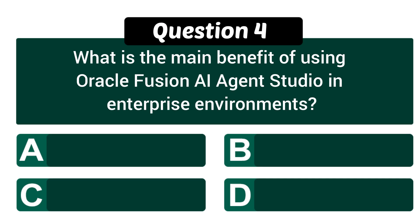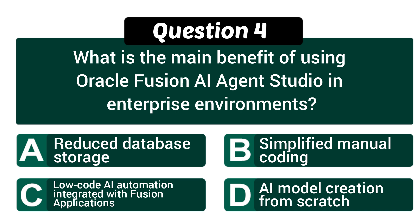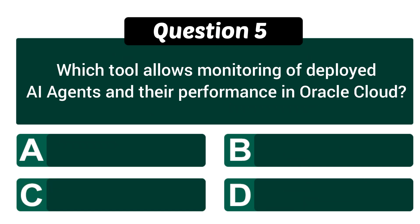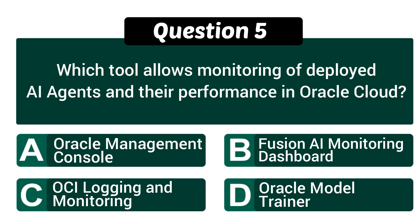Question four: what is the main benefit of using Oracle Fusion AI Agent Studio in enterprise environments? Correct answer: C — low-code AI automation integrated with Fusion applications. Question five: which tool allows monitoring of deployed AI agents and their performance in Oracle Cloud?